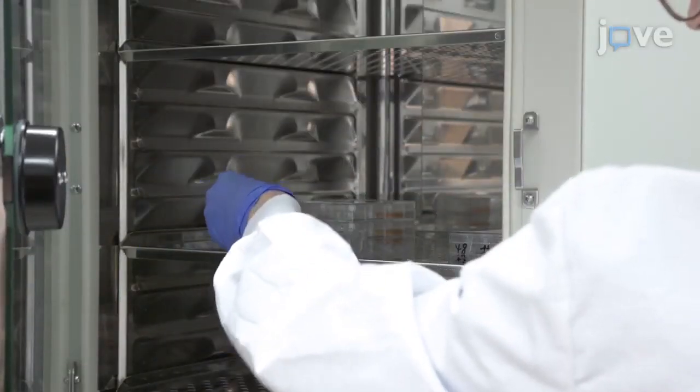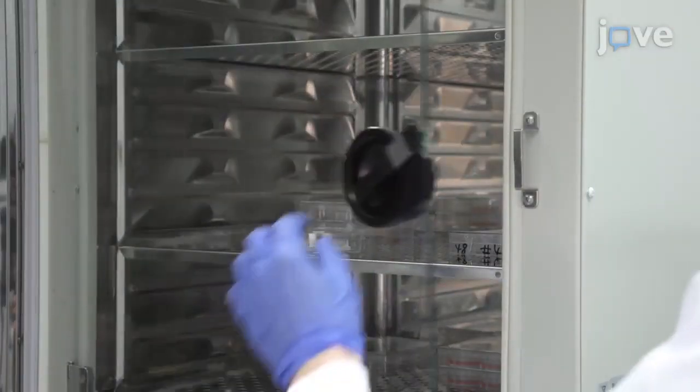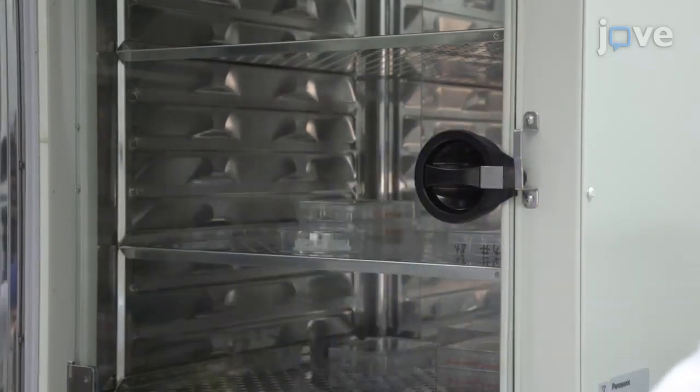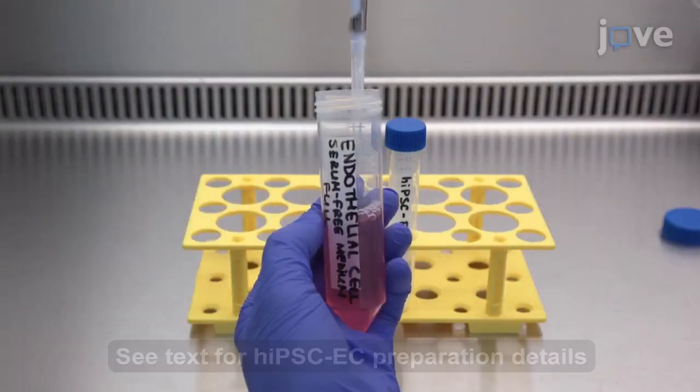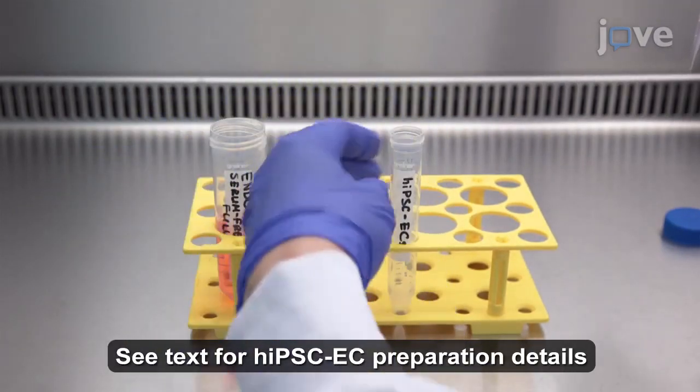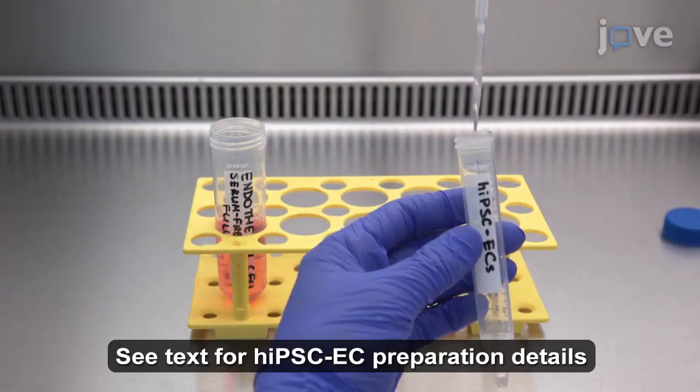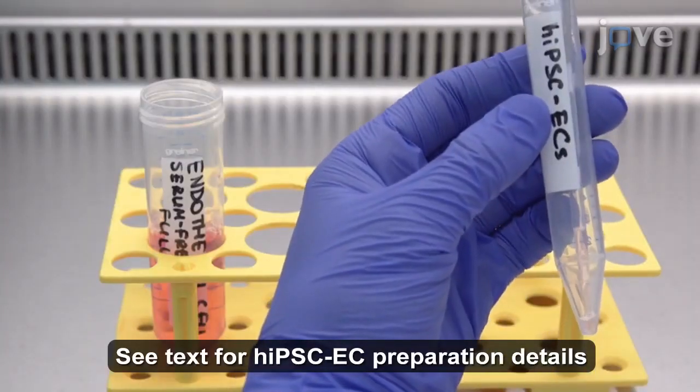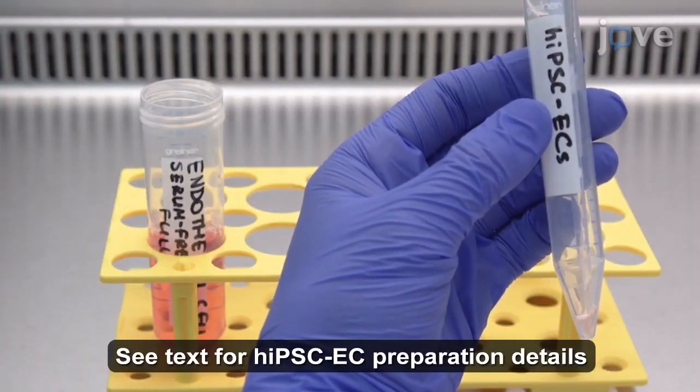The next morning, pre-warm the biochip in a 37°C incubator and re-suspend human induced pluripotent stem cell-derived endothelial cells harvested from an 80-100% confluent cell culture at the desired concentration in fresh endothelial cell serum-free medium.